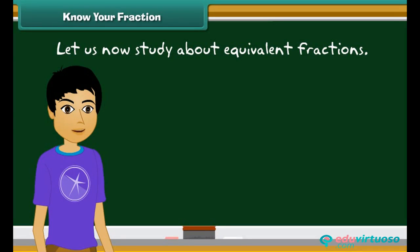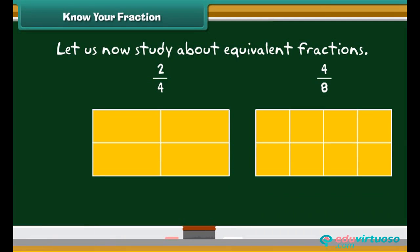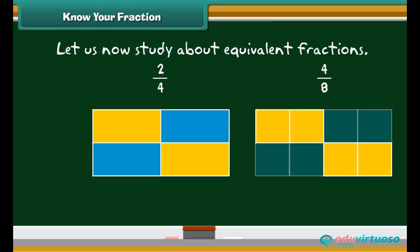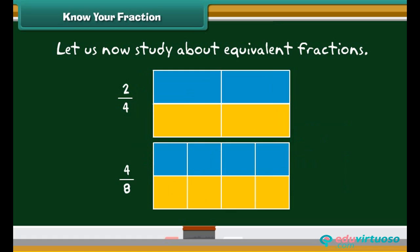Let us now study about equivalent fractions. Look at the rectangular boxes given below. In the first figure, two by four boxes are blue, while in the second figure, four by eight boxes are blue. Observe carefully — the blue colored parts of both boxes are the same.